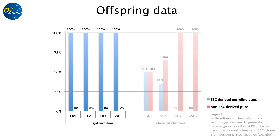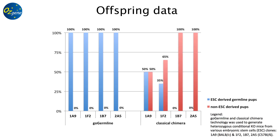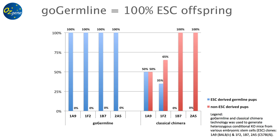Let's look at the data side by side. In summary, GoGermline generates 100% offspring from the ES cell, unlike standard gene targeting.